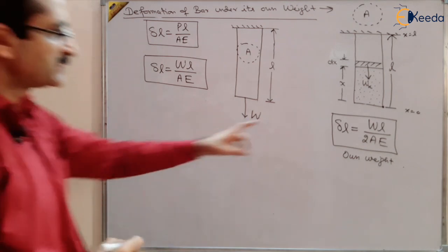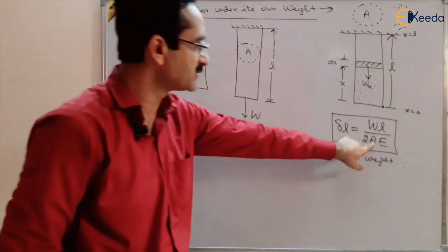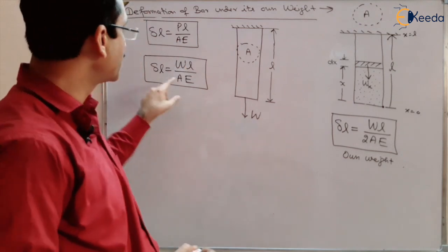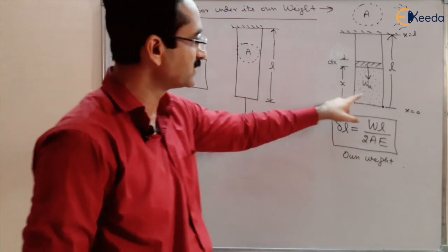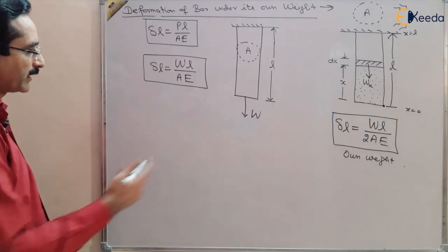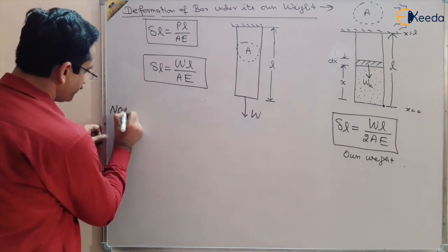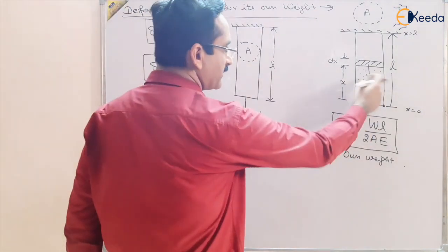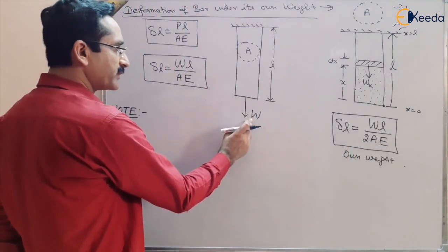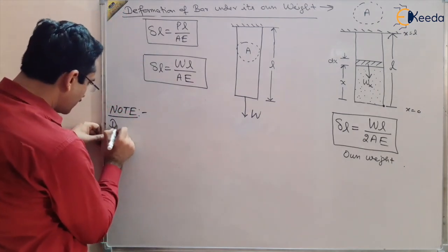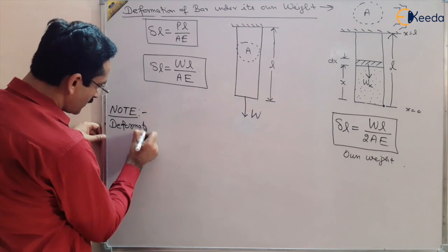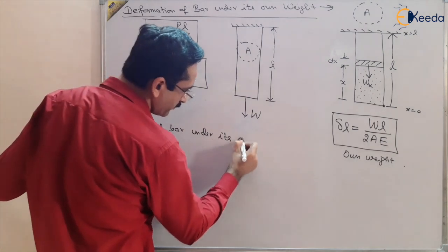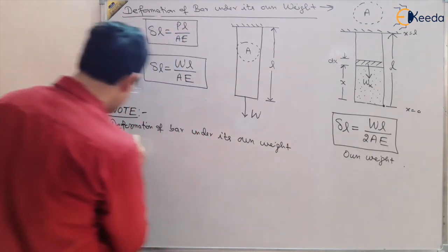You can see that the deformation under self-weight (WL/2AE) is half the deformation when the same load is applied externally (WL/AE). That means when you apply the force externally, you get double the deformation compared to when the deformation is caused by the bar's own weight. So we can note: the deformation of the bar under its own weight is half the deformation of the bar when the same load is applied externally.